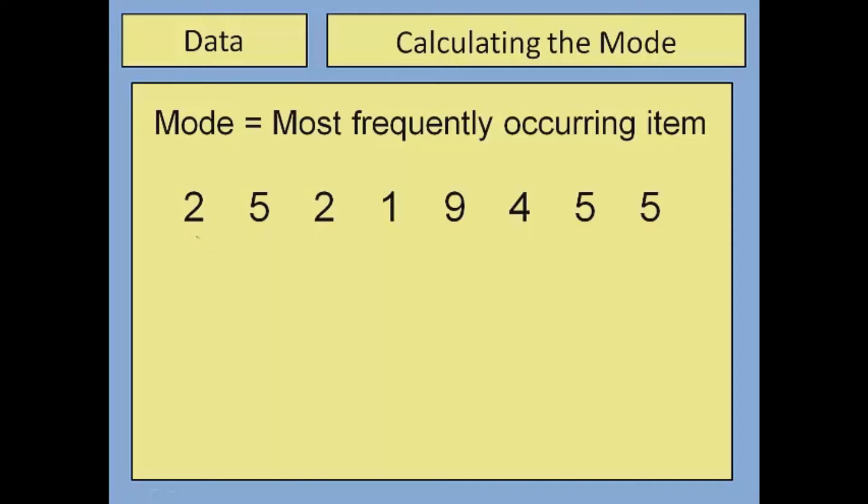In this example we are looking for the most frequently occurring item, and in this case it's a number. The number two appears twice but the number five appears three times and the other three numbers only appear once. So for this one, the mode equals five because it's the most frequently occurring number.